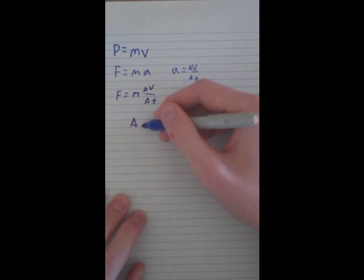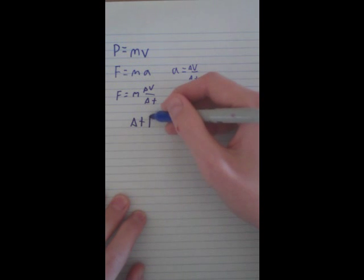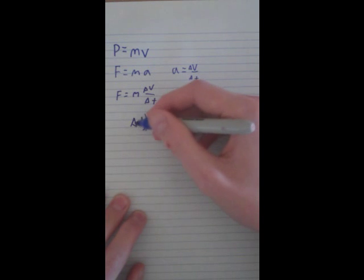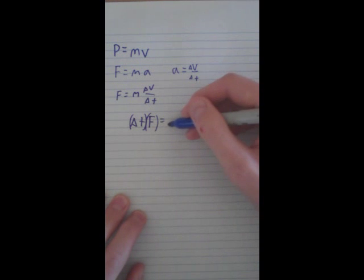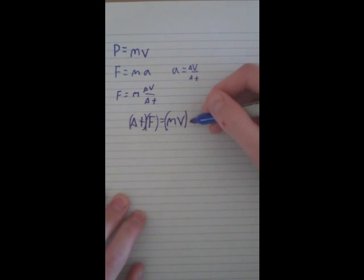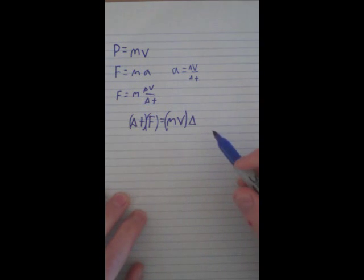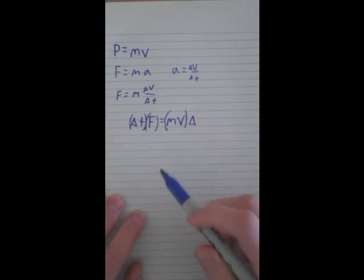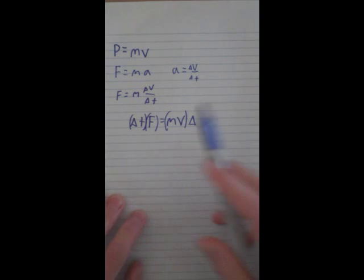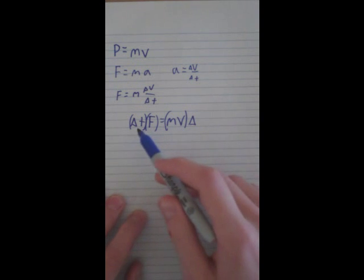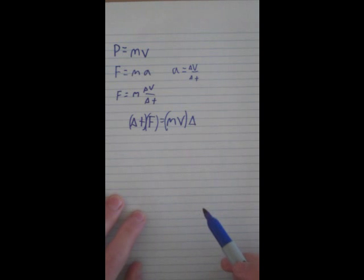So delta t times force equals mass times velocity or delta momentum. So these are the two formulas you should know: that P equals mv and impulse, which is a form of momentum, is force times change in time. So let's look at an impulse problem really quickly.